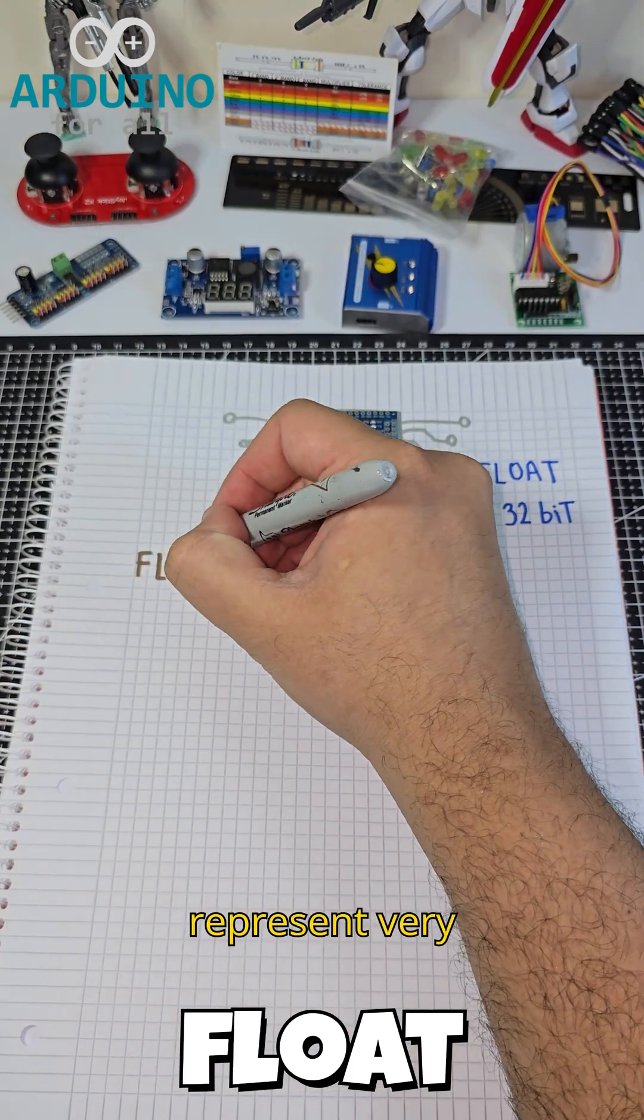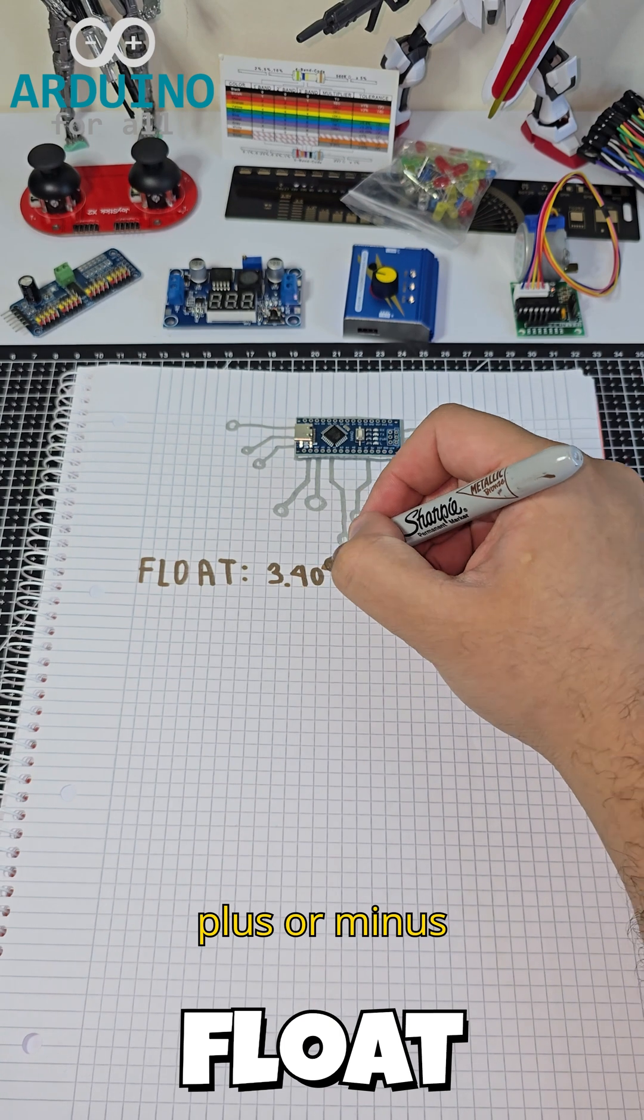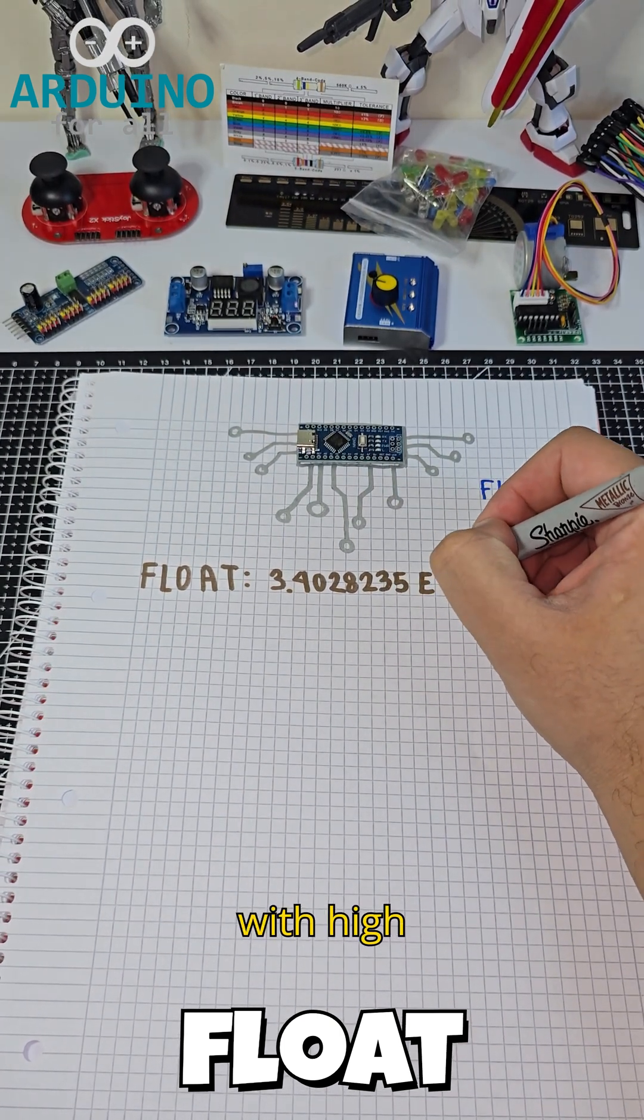It can represent very large and very small numbers, from about plus or minus 3.4 times 10 to the 38th power, with high precision.